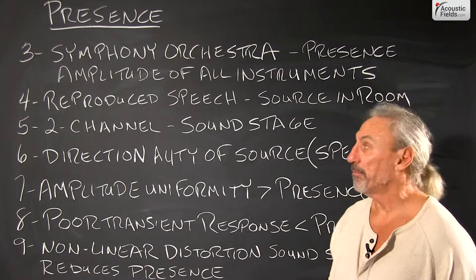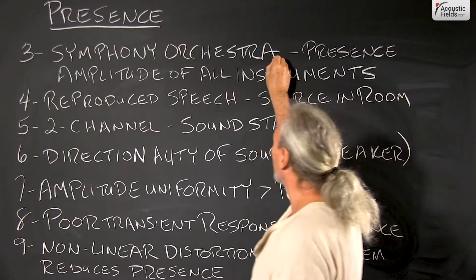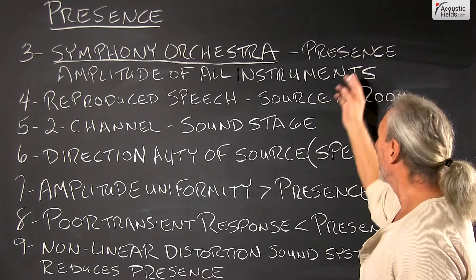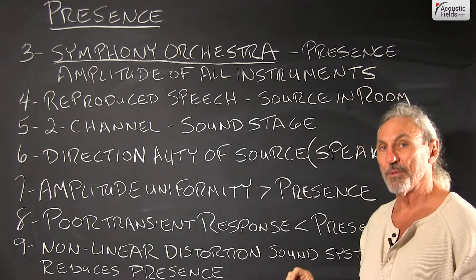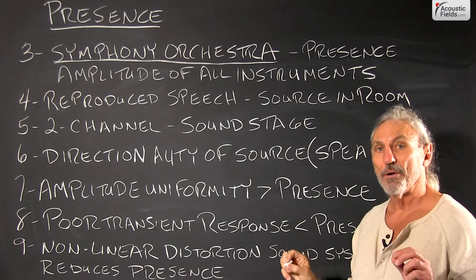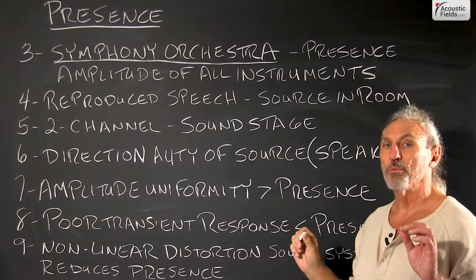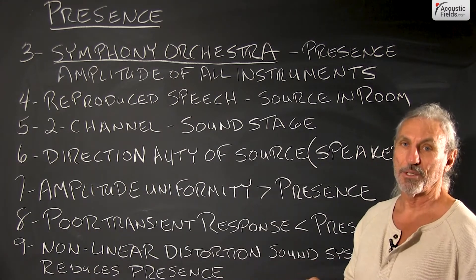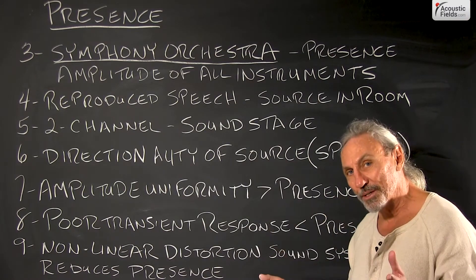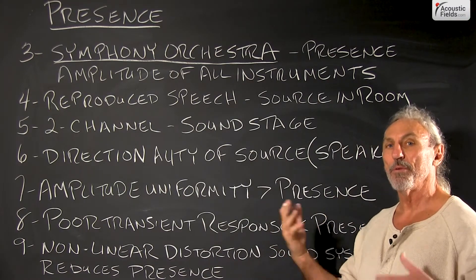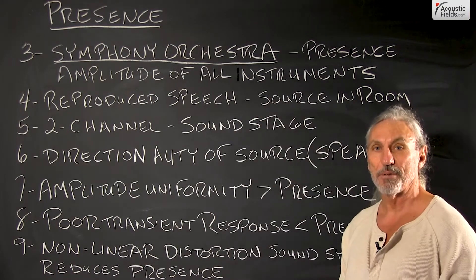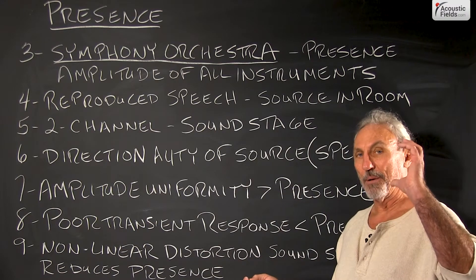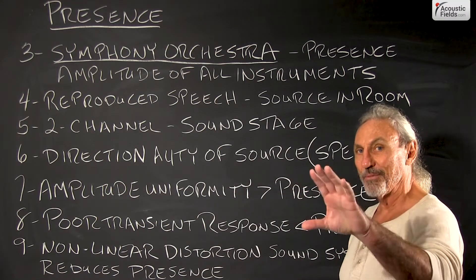Let's look at some definitions of presence using a symphony orchestra, which I really like to use to illustrate things. There is presence when all the instruments are of the same strength and there's real good balance. If the drums, timpani, percussion sections, and tubas are way overbalanced — too much energy relative to the rest of the instruments — we lose presence.